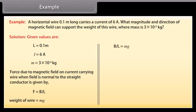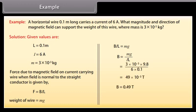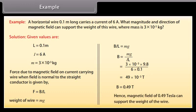This can be written as B = MG / (IL). By putting in the values and calculating, we get B = 0.49 Tesla. Hence a magnetic field of 0.49 Tesla can support the weight of the wire.